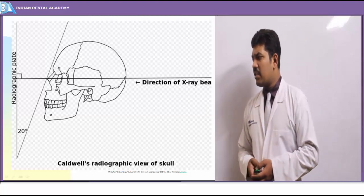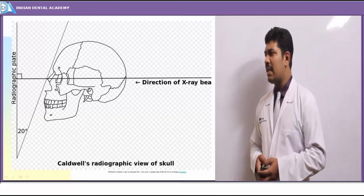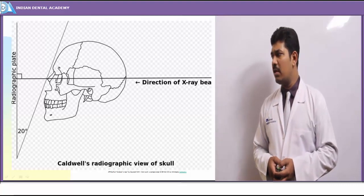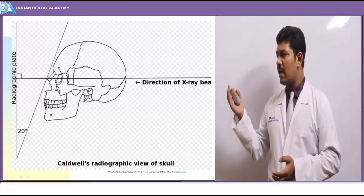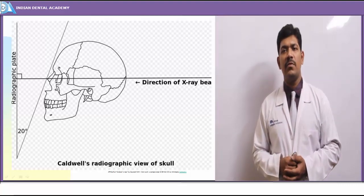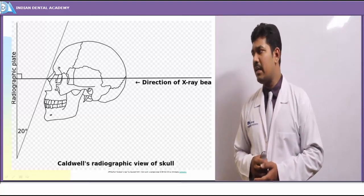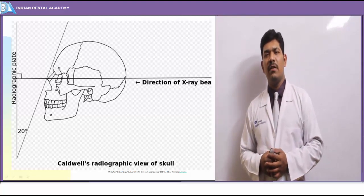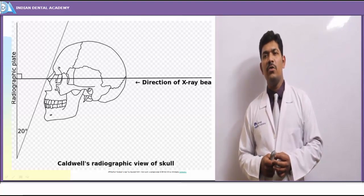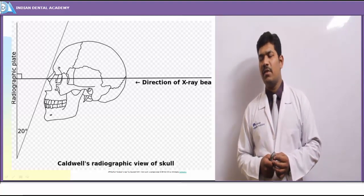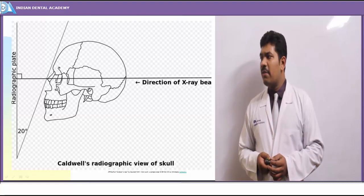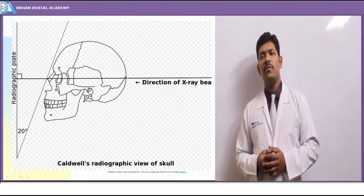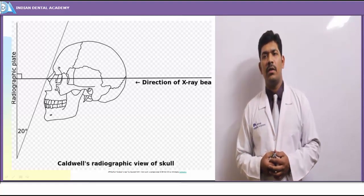The Caldwell radiographic view is a slight modification of the posterior-anterior projection. The X-ray beam enters from the posterior end and exits to the anterior end, almost similar to a PA view, but specifically used for orthodontic purposes with a 20-degree angulation given to the posterior view.